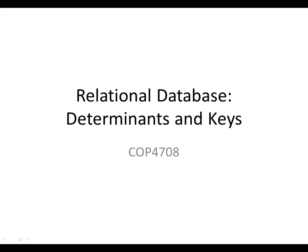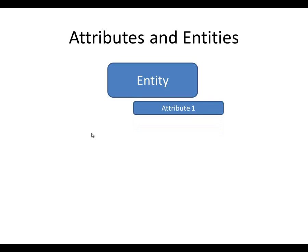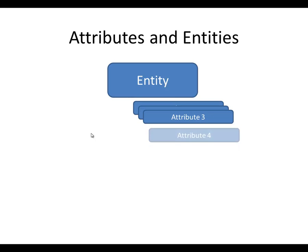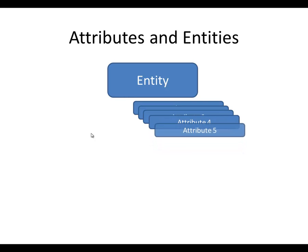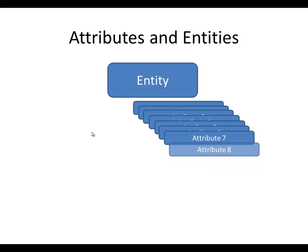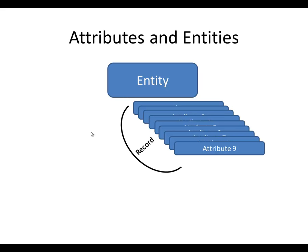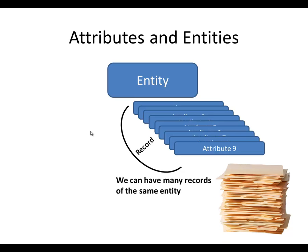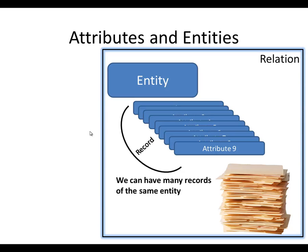Hello and welcome to COP4708. In the last session we talked about entities and that each entity has more than one attribute. For example, if we are talking about a student, we are talking about the name, street address, email, city, state, zip code, and so on. All these attributes can form what's called a record, and usually we have many records for the same entity. All these records can be saved in what's called a relation.